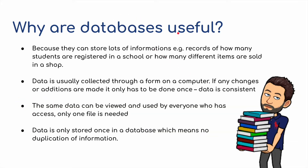Why is a database useful? Well, they're certainly more useful than carrying lots and lots of books around. It means we can store lots of information all in one place — for example, records of how many students are registered in a school, or how many different items are sold in a shop. Data is usually collected through a form on a computer. If any changes or additions are made, it only has to be done once. Data is consistent — the same data can be viewed and used by everybody who has access to that database. Only one file is needed, and data is only stored once, which means no duplication of information.